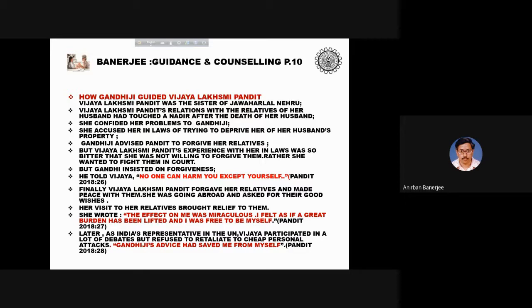Vijayalakshmi Pandit was the sister of Jawaharlal Nehru. After the death of her husband, her relations with her in-laws touched a nadir. She confided her problems to Gandhiji, accusing her in-laws of trying to deprive her of her husband's property. Gandhi advised her to forgive her relatives, but she was not willing and wanted to fight them in court. Gandhi insisted on forgiveness and told Vijaya, 'No one can harm you except yourself.' Finally, Vijayalakshmi Pandit forgave her relatives and made peace with them.